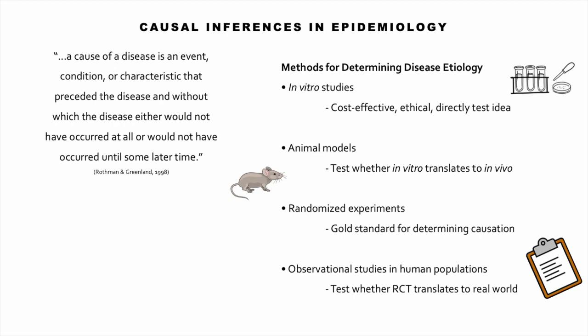The basic objective in epidemiology is to prevent disease by finding the cause of disease, removing the cause, then evaluating whether the disease has been prevented after we removed the cause. The cause of disease is an event, condition, or characteristic that preceded the disease and without which the disease either would not have occurred at all or would not have occurred until some time later.